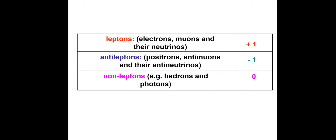Just a reminder from last lesson. Leptons — electrons, muons and neutrinos — have a lepton number of plus 1. Antileptons — positrons, antimuons and their antineutrinos — have a lepton number of minus 1. Non-leptons have a lepton number of 0.